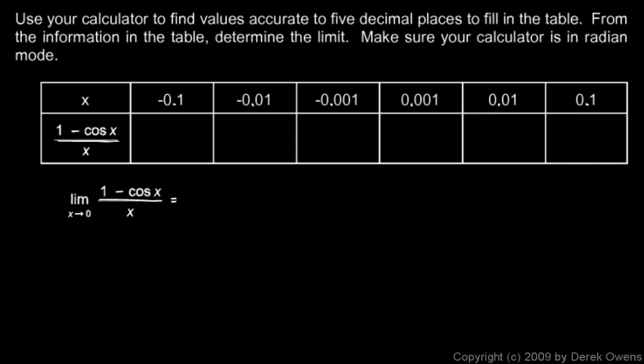So let's write that in there, negative 0.04996. We're told to do this to five decimal places. And then putting in the other values, I'll give you the numbers here. It's negative 0.00500. Notice that this number is a lot closer to 0 than that one. And the next one is negative 0.00050. So this one is even closer to 0.